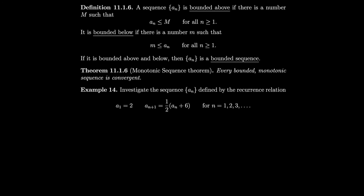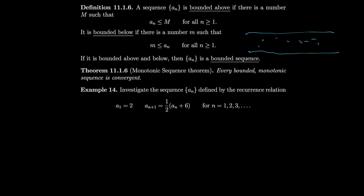A sequence an is bounded above if there is a number M such that an ≤ M for all n ≥ 1. Similarly, if there is a number m such that an ≥ m for all n, then the sequence is bounded below. If it is both bounded above and below, the sequence is bounded. The Monotonic Sequence Theorem states: every bounded monotonic sequence is convergent.